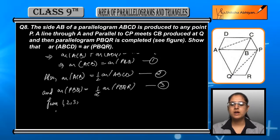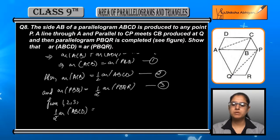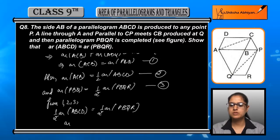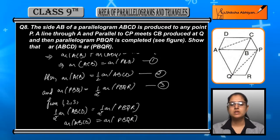Similarly, ar(PBQ) = 1/2 ar(PBQR). This is equation 3. Since ACB and PBQ are equal, we can combine equations 1, 2, and 3.